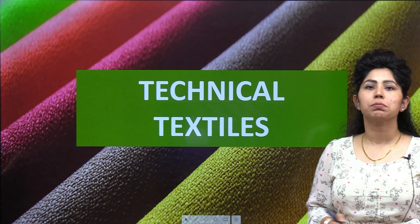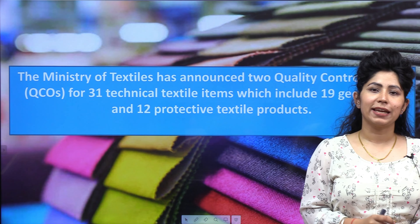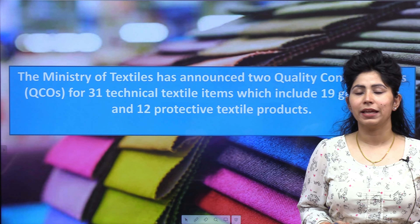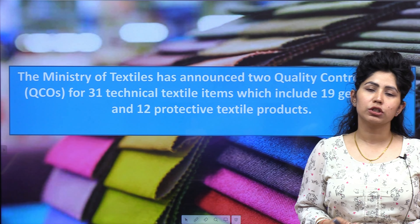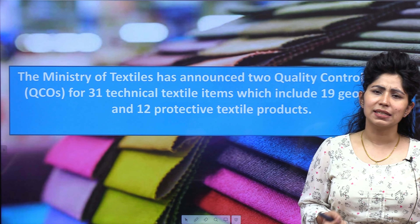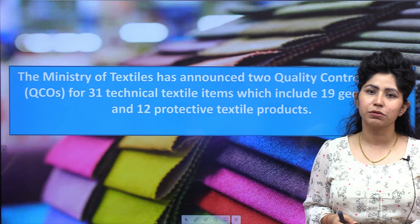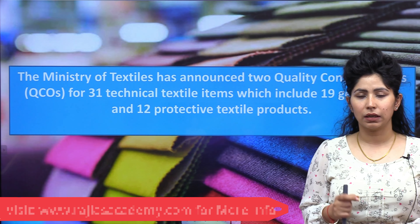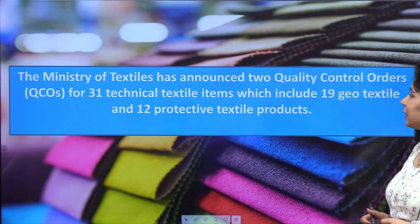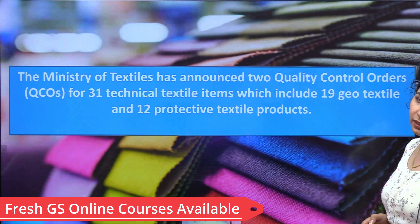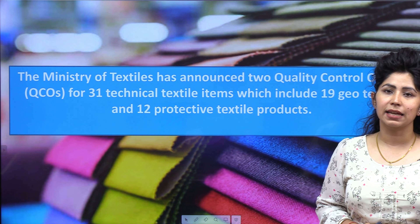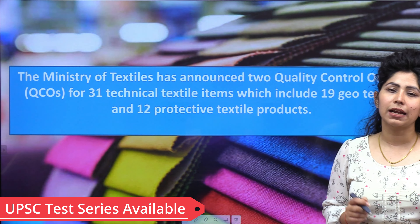The third thing in recent news is quality control orders. For technical textiles produced in India, or the raw materials used to produce them, some orders have been issued to control quality. The Ministry of Textiles has announced 2 quality control orders for 31 technical textile items, which include 19 geo-textiles and 12 protective textile products.